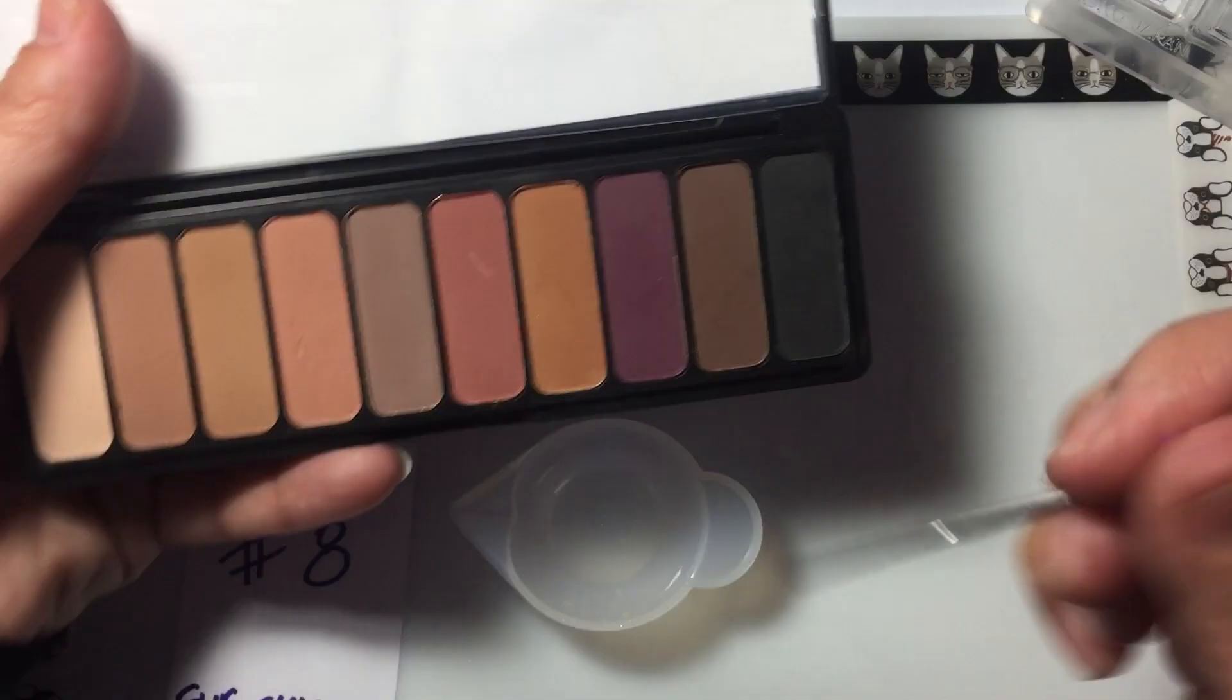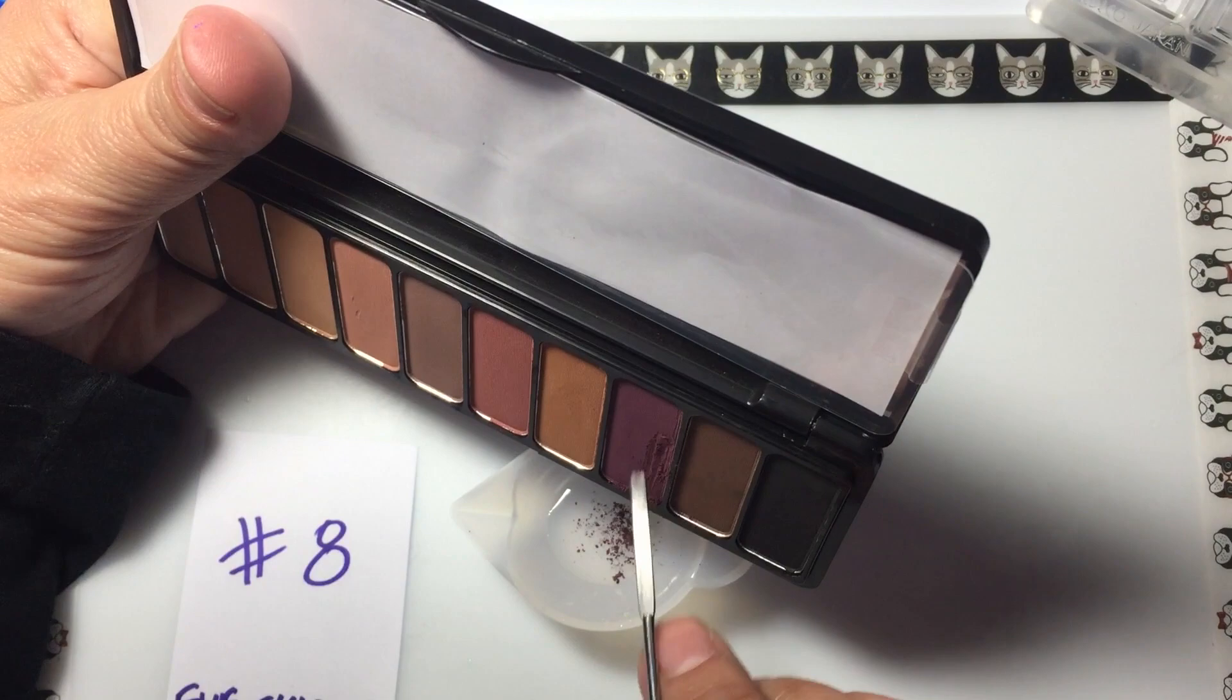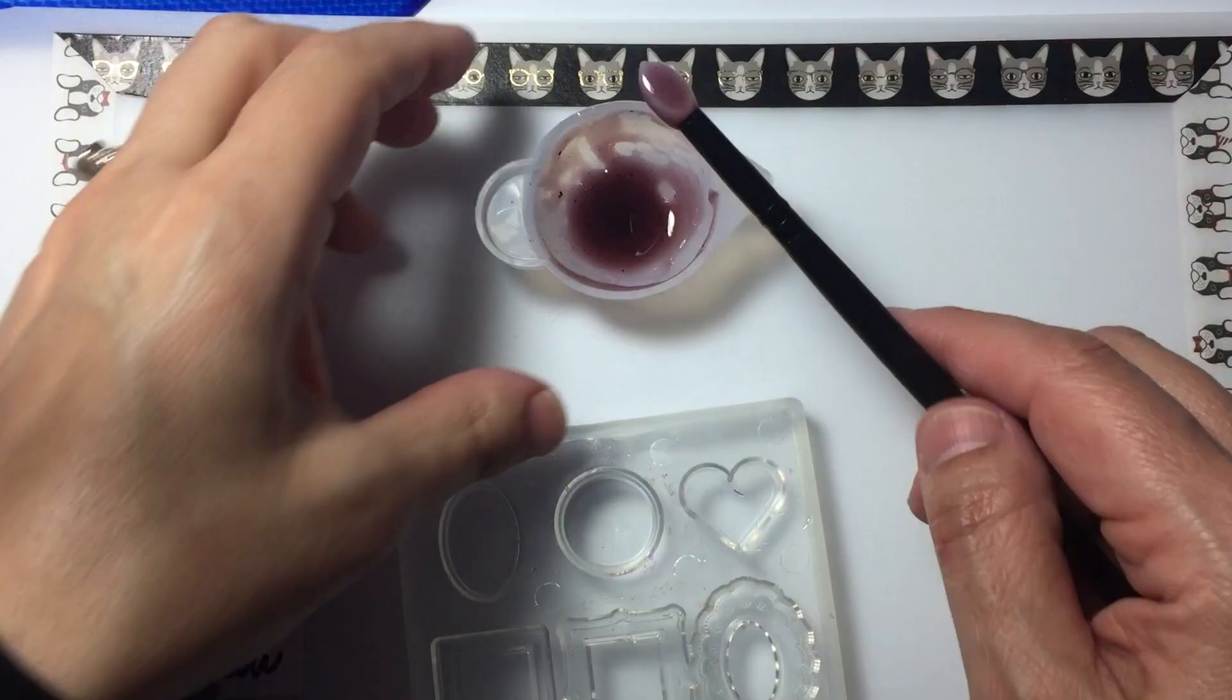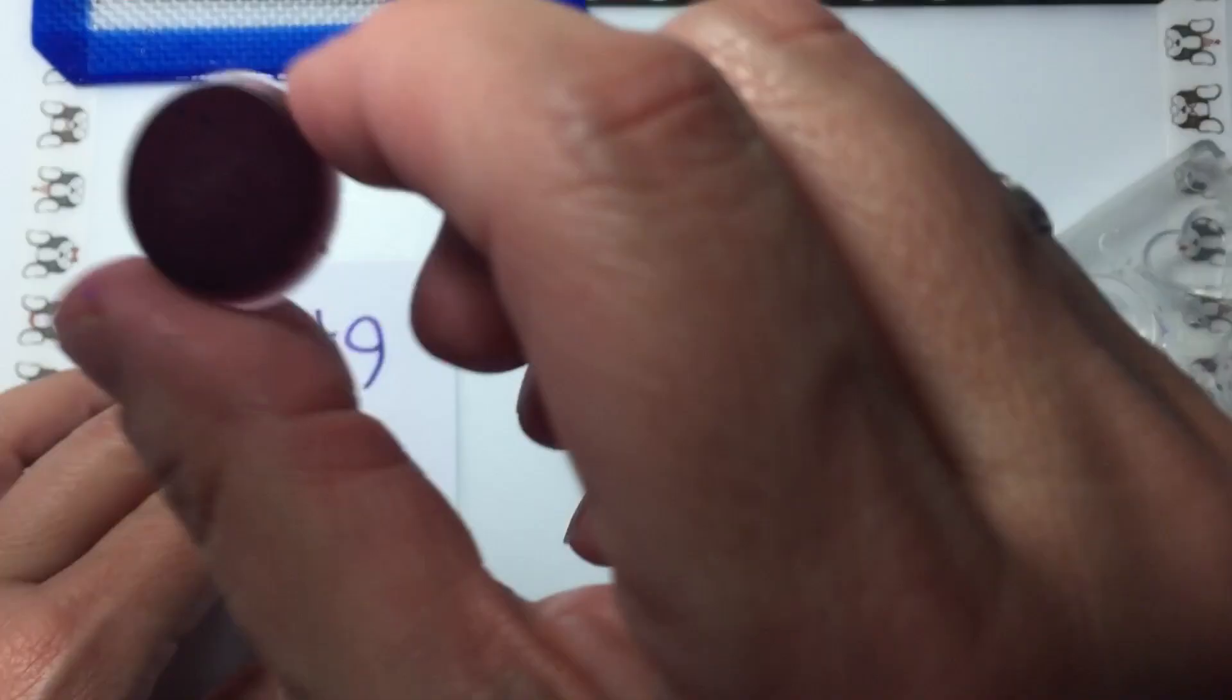The eighth way to color resin is with eyeshadow. You could also use blush. Just like with the mica powders, you want to make sure you don't have any chunks in your resin because otherwise you'll see those and it won't cure really nicely. This isn't the greatest color that I'm using. It's kind of a dark burgundy but it does work well.